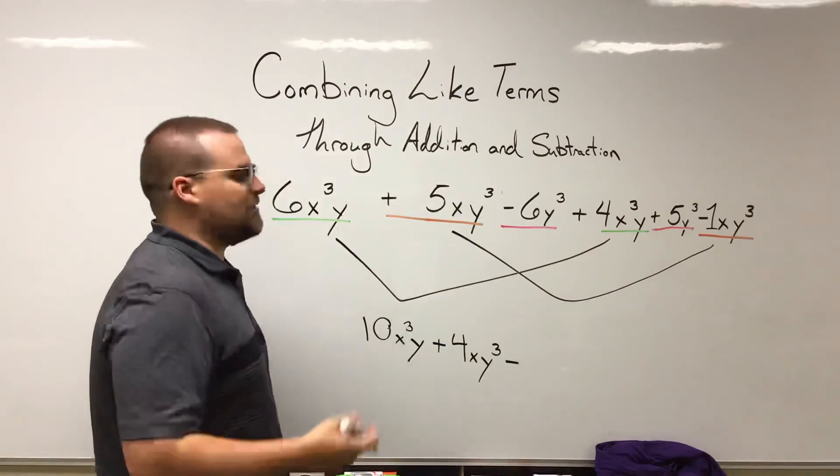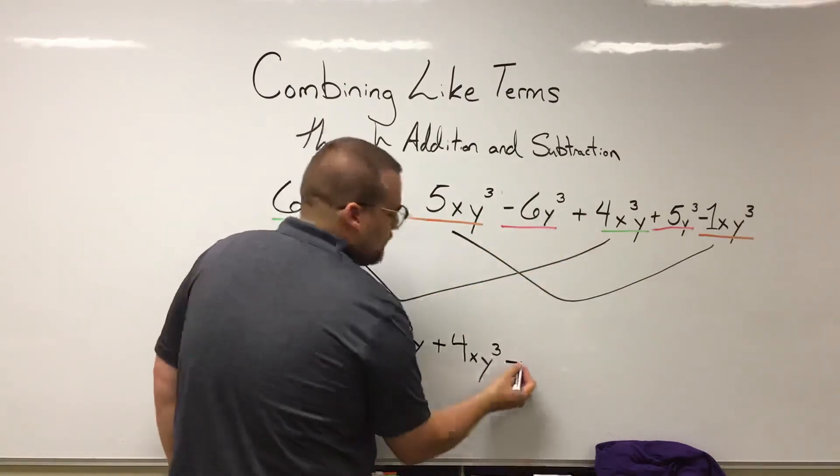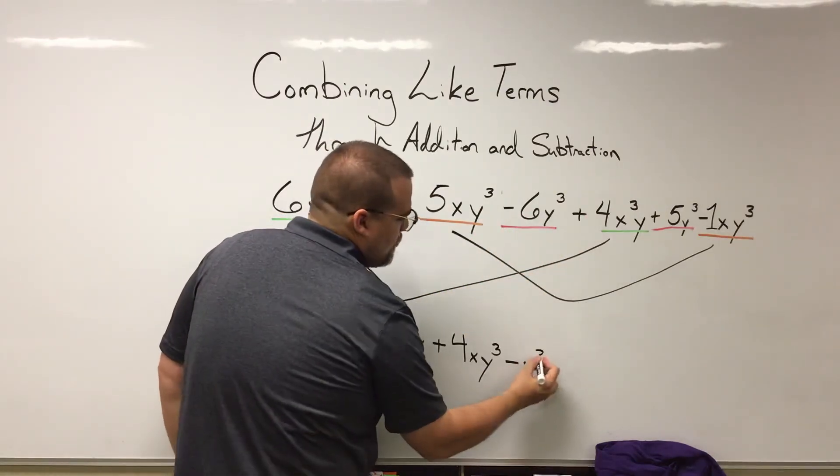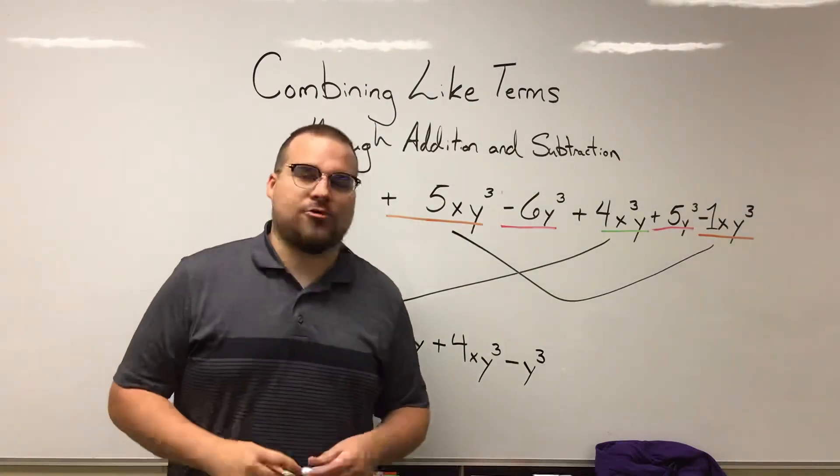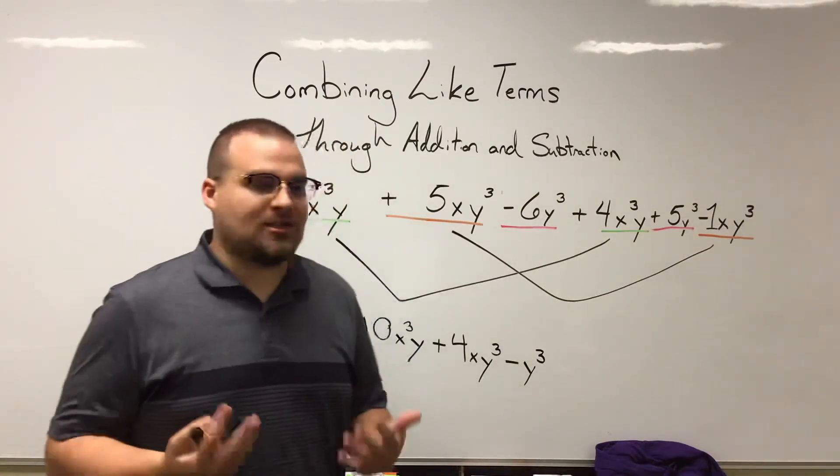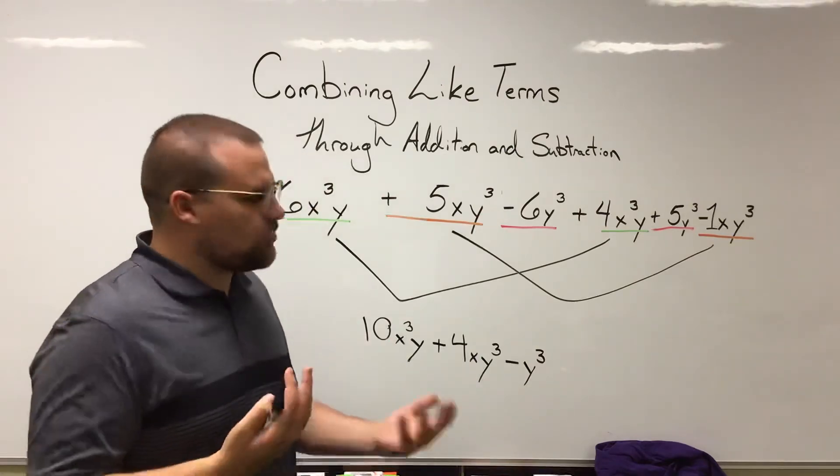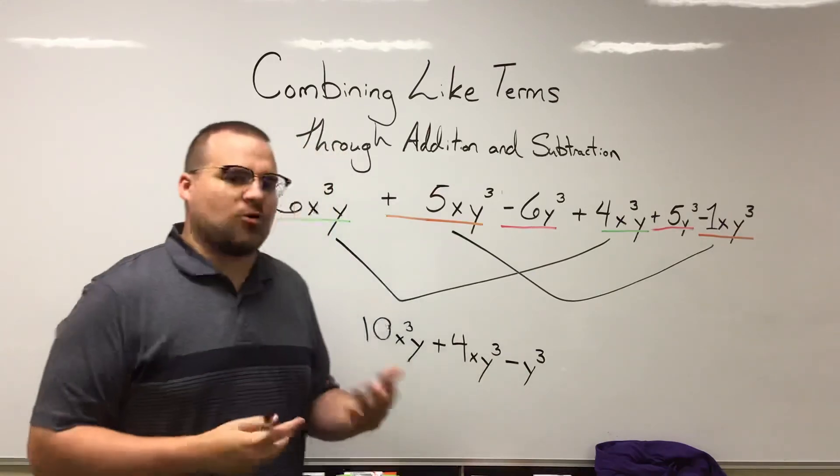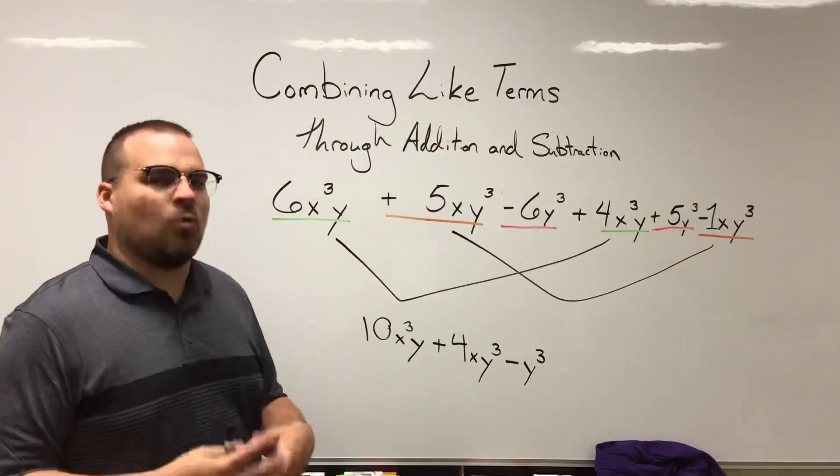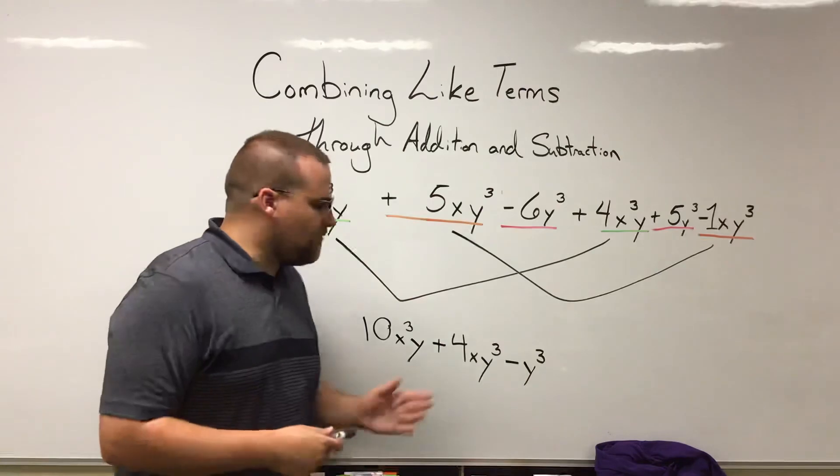We can just leave that as -Y³. If you want to write that coefficient there, -1Y³, you can. It is not technically incorrect, but this is just another one of those kind of math traditional ways of writing things where we don't really need to write a 1 coefficient.